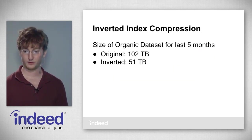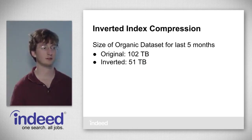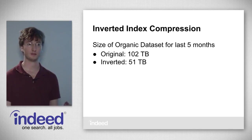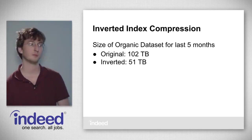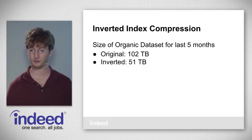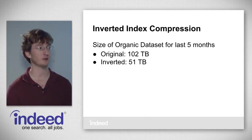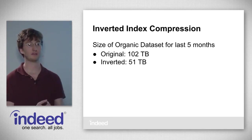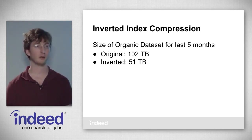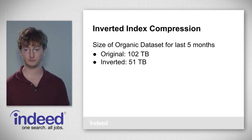Our inverted index started off as that standard index — just a set of documents. For our organic impressions data set for the last five months, that's 102 terabytes of data — pretty big. The inversion itself is a form of compression, like dictionary compression, because you're taking your terms and only storing one instance, then just storing a number for each occurrence. The inversion itself actually cuts the size of the data set in half, from 102 terabytes to 51 terabytes.